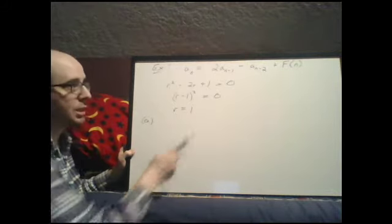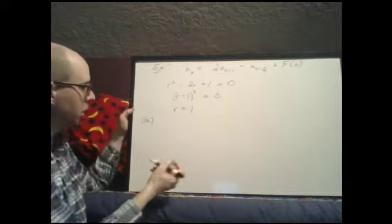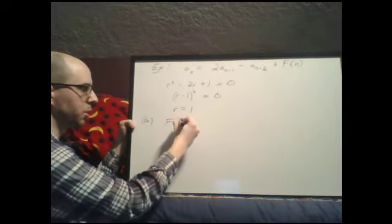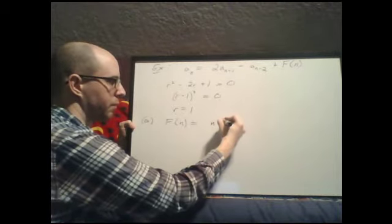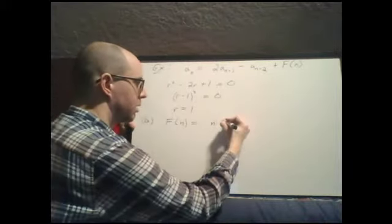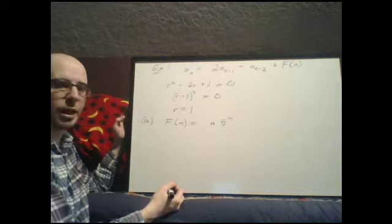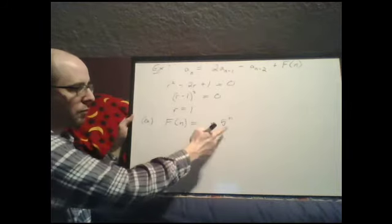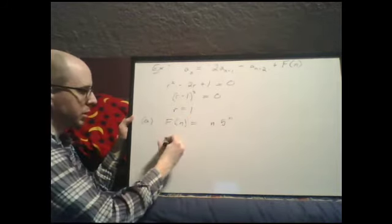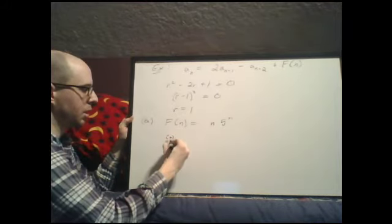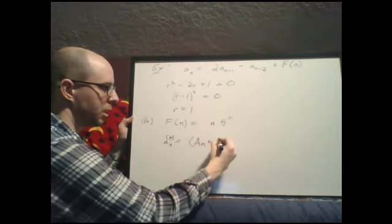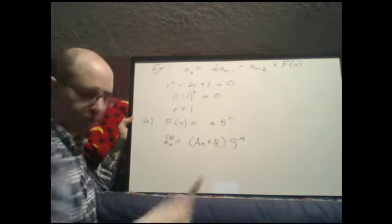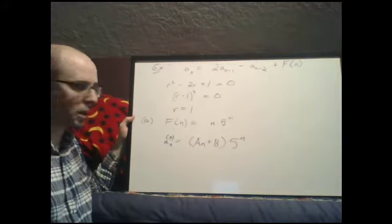When 1 is one of our roots we have to be very careful. Part a: if f(n) equals n times 5 to the n, the base 5 is not one of our roots, so there's nothing special. a_p(n) is just a linear polynomial (a·n plus b) times 5 to the n.